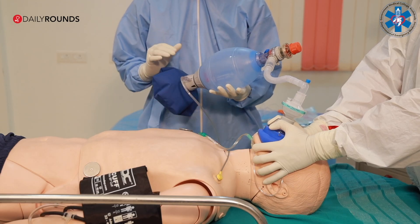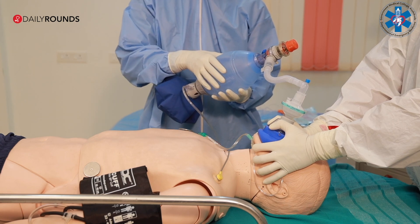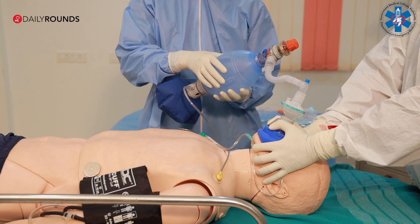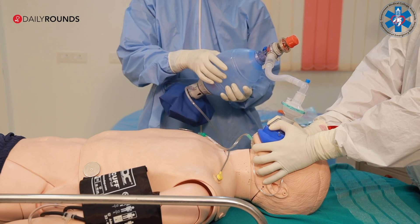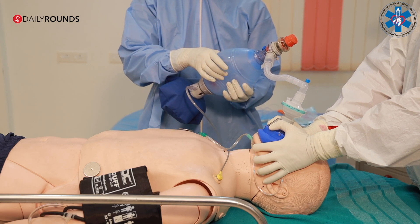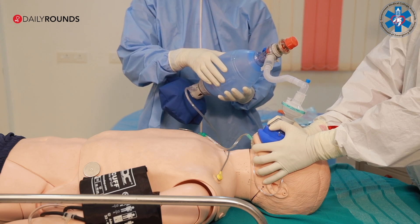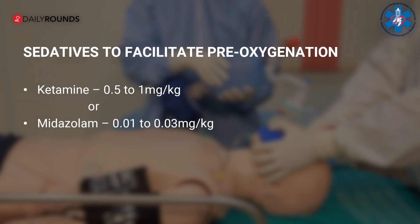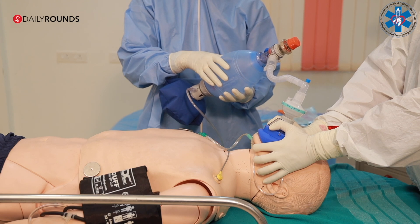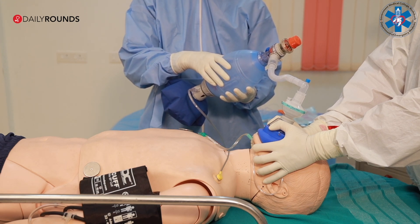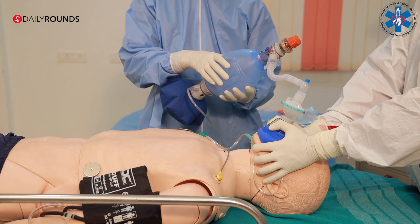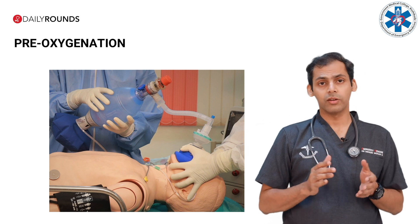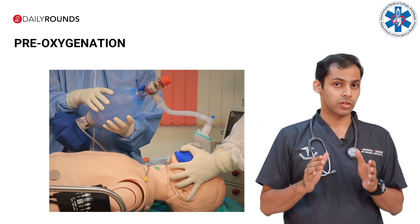Avoid bagging as far as possible. A low-pressure bagging technique may be used at 6–10 breaths per minute if the patient has poor respiratory effort. If the patient is agitated due to hypoxia, pre-oxygenation may be done after giving 0.5 to 1 mg per kg of ketamine, or 0.01 to 0.03 mg per kg of midazolam depending on hemodynamic status. The patient may be positioned in a ramped-up position to facilitate pre-oxygenation and intubation. Pre-oxygenation should be continued for 3–5 minutes.